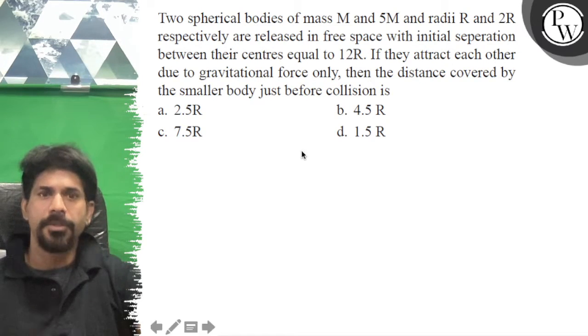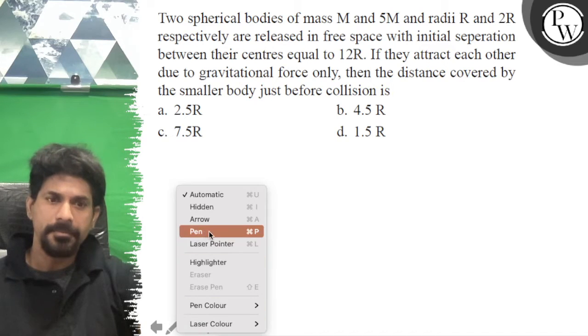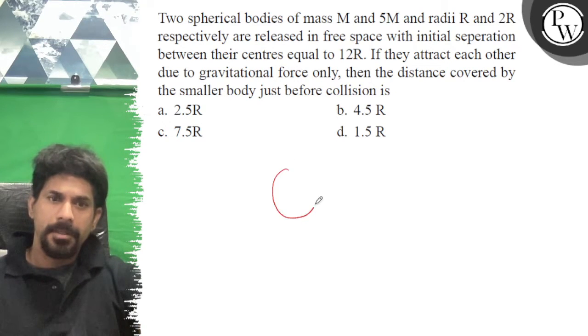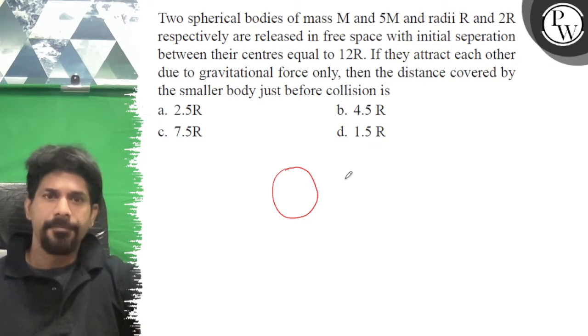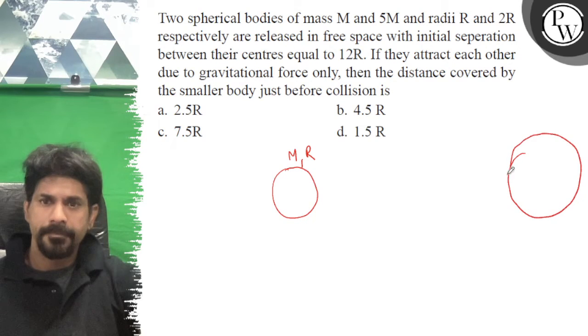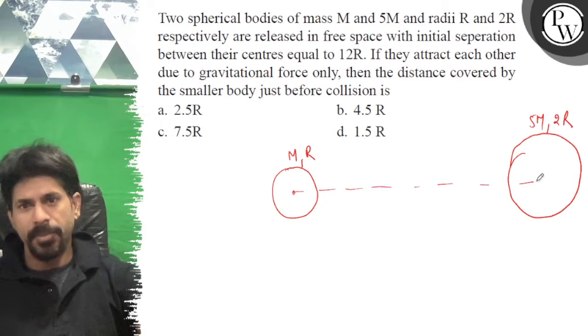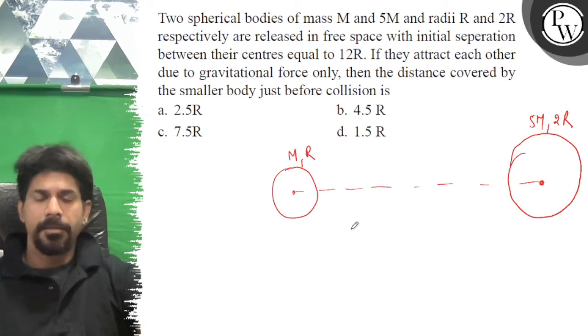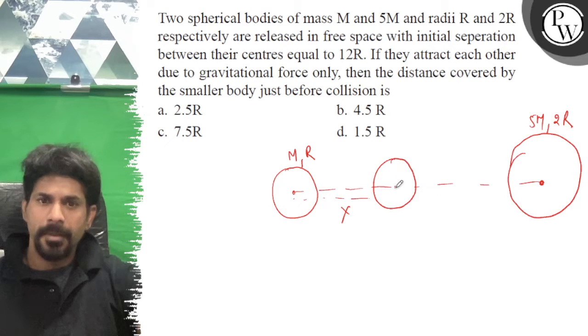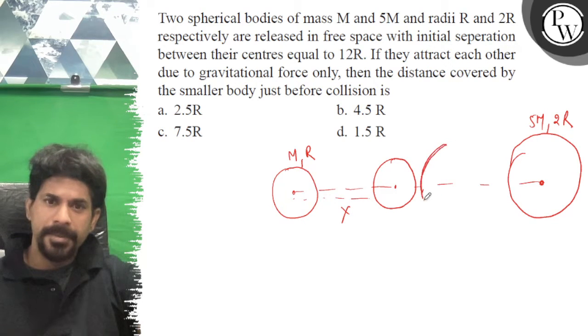then the distance covered by the small body just before collision. So one body has mass M and radius R, and the other has mass 5M and radius 2R. This separation we are working on, the distance traveled goes to x.